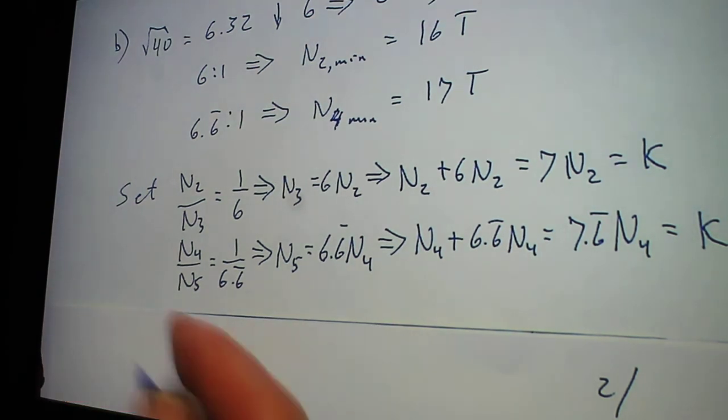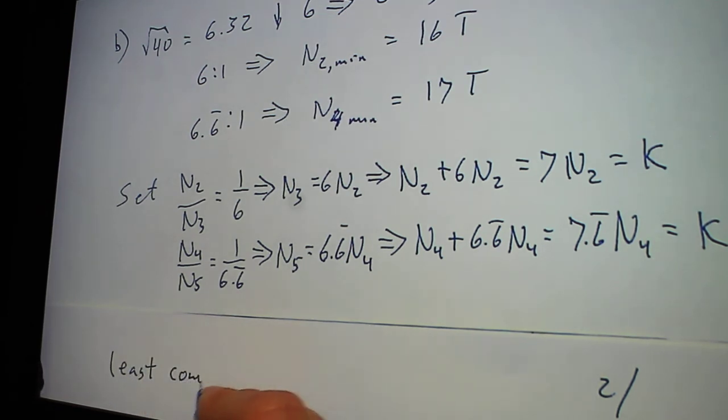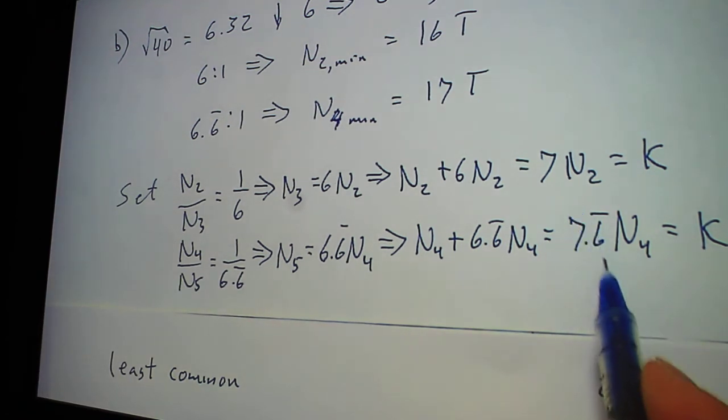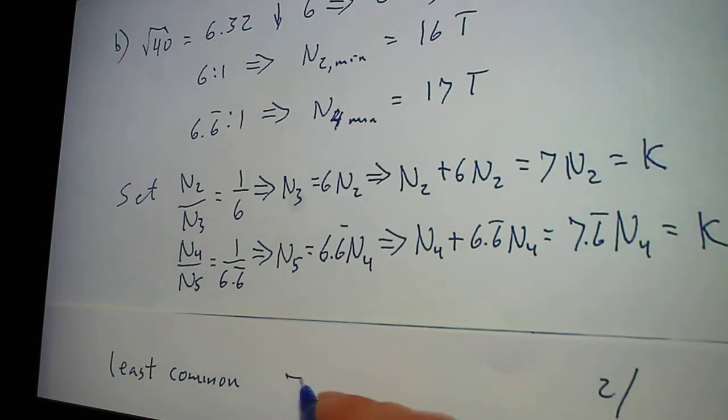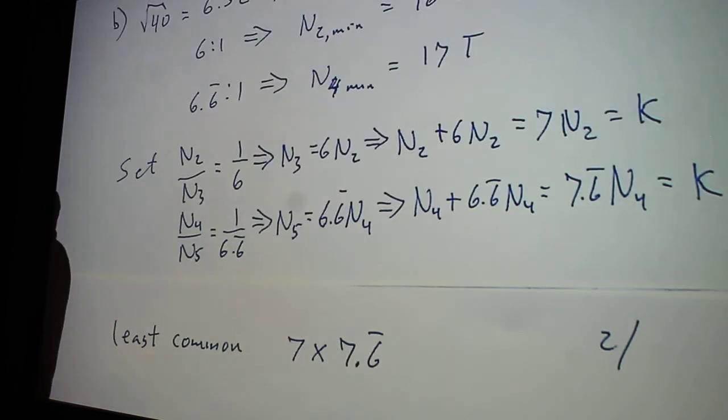So if I look at the least common multiple, the first thing that I do with these things is I'll take this value and multiply it times this value. So 7 times 7.6, I know that this will work. It may create a K that's too big or too small, but I know it will work.